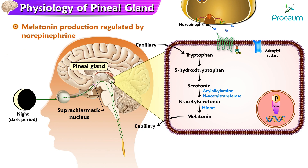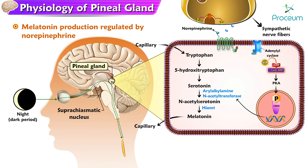Melatonin production is regulated by the hormone norepinephrine, which is released from sympathetic nerve fibers that innervate the pineal gland. Norepinephrine stimulates the production of cyclic adenosine monophosphate (cAMP), which in turn activates the production of melatonin.